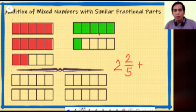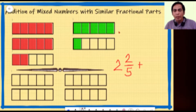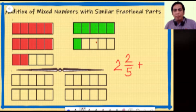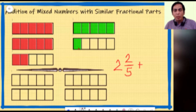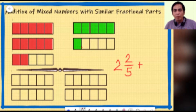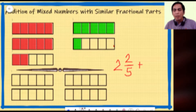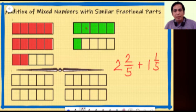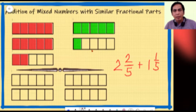For the green tiles: all five parts are shaded, giving us one whole. Then only one part is shaded in the next tile, so we have one fifth. That gives us the mixed number one and one fifth. Now let us put together the red tiles and the green tiles and find out how many parts they cover.